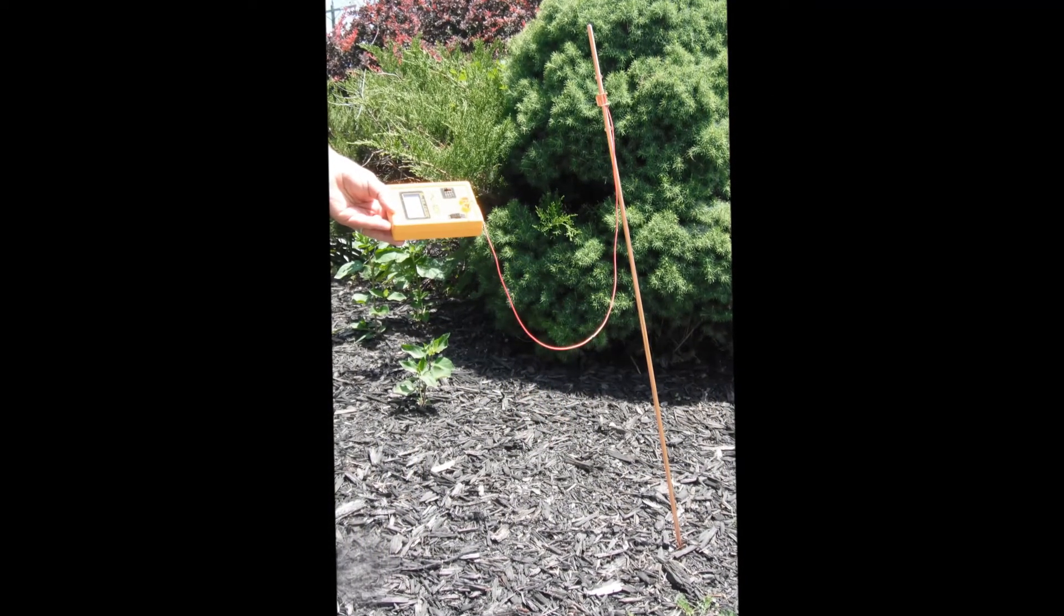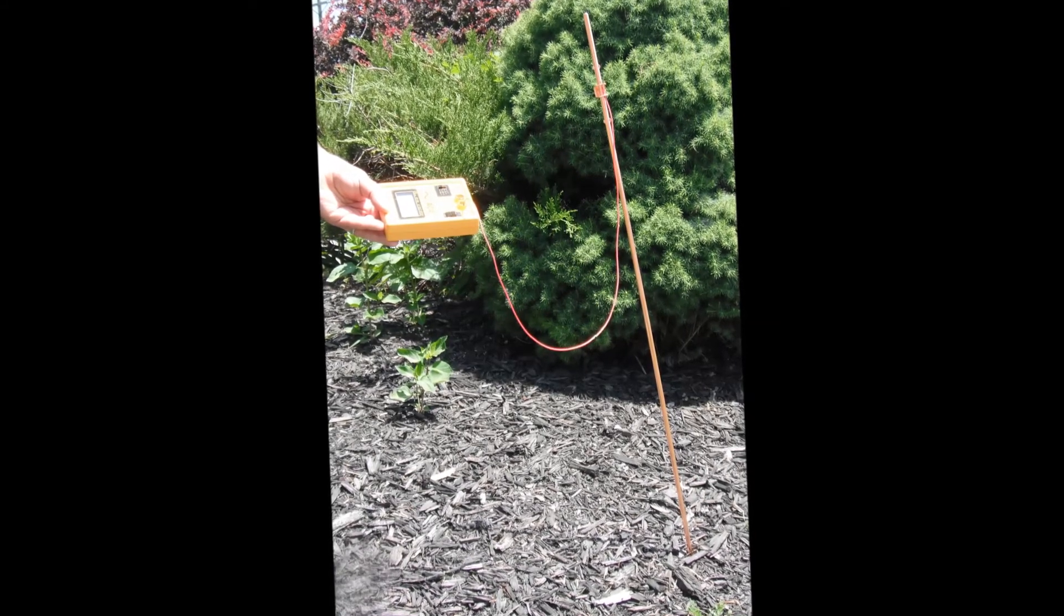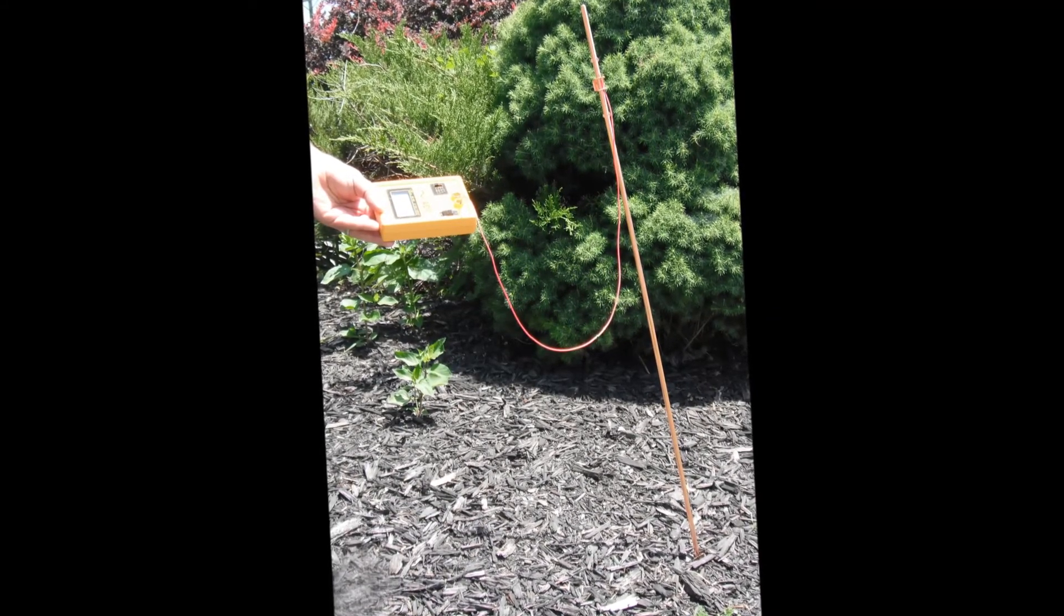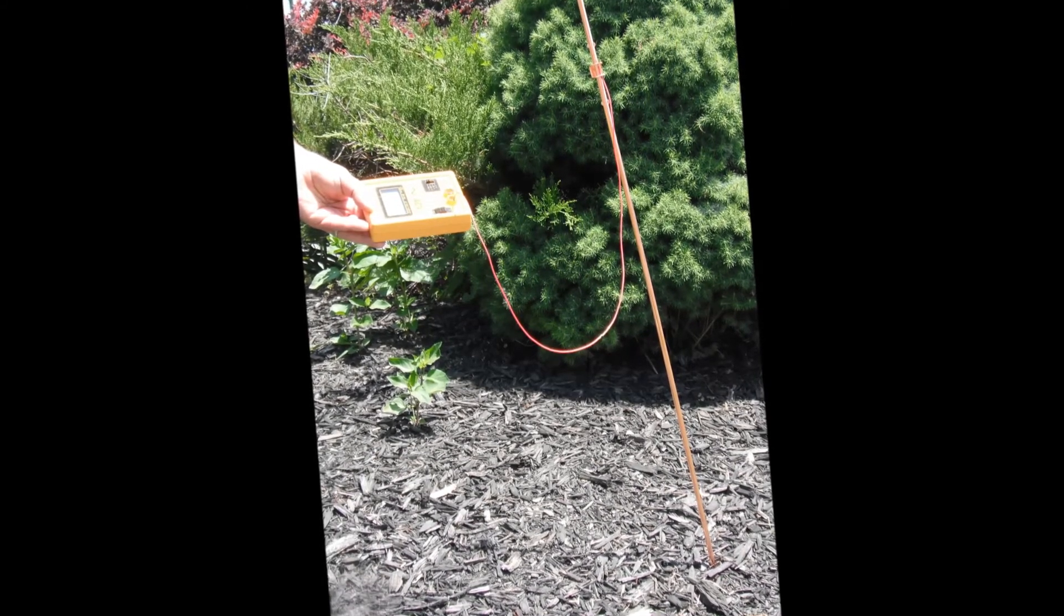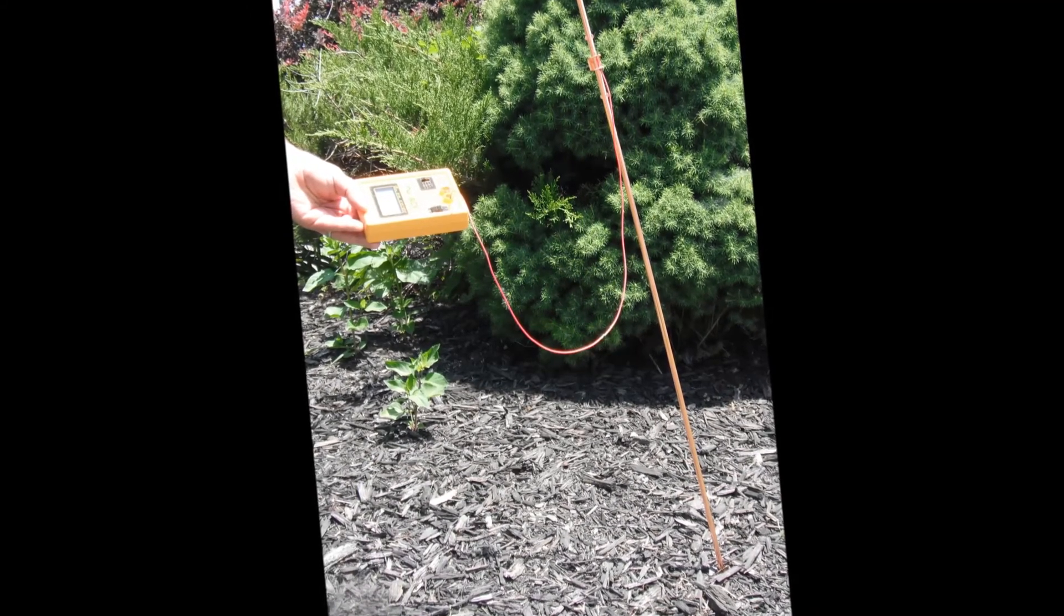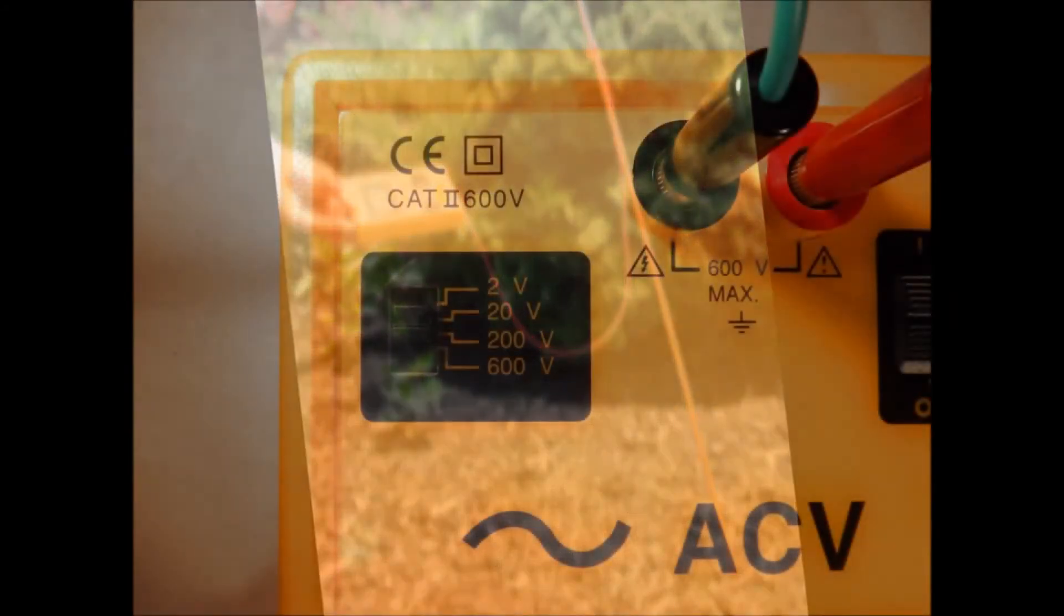If a properly grounded outlet is not available, or if voltage on the ground wire produces artificially high body voltage readings, use the alligator clip cable to connect to a long metal stake driven into the earth, grounded water pipes, or other convenient and safe grounded objects.